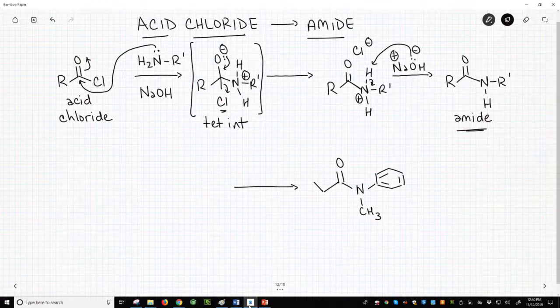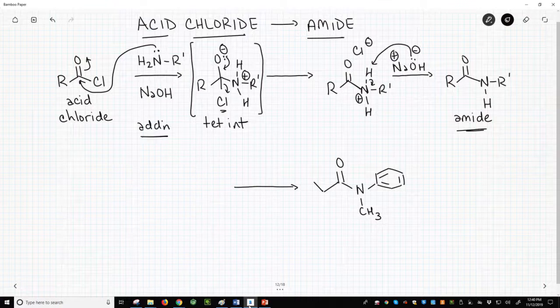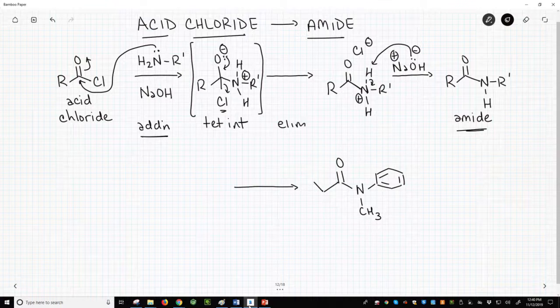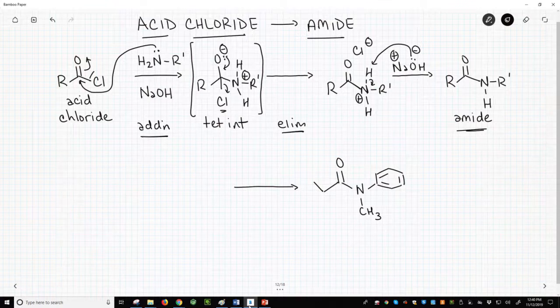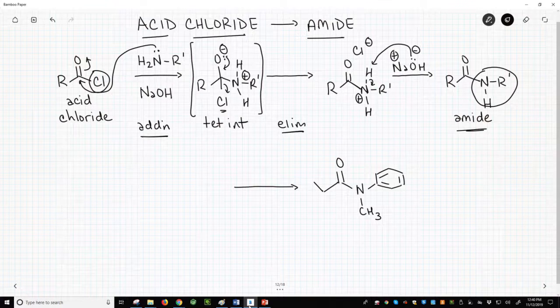As with all reactions of acid chlorides in acid derivative chemistry, our reaction first involves an addition reaction followed by an elimination reaction to achieve a substitution. We have replaced the chlorine in our acid chloride with a nitrogen group. This is a substitution.